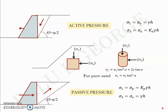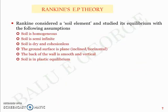To define these things, we have an earth pressure theory proposed by Rankine. Rankine considered a soil element similar to what we discussed and studied its equilibrium. His assumptions are: soil is homogenous, soil is semi-infinite, soil is dry and cohesionless, the ground surface is plain (either inclined or horizontal), the back of the wall is smooth and vertical, and the soil is in plastic equilibrium. Based on these assumptions, Rankine arrived at a few relations.